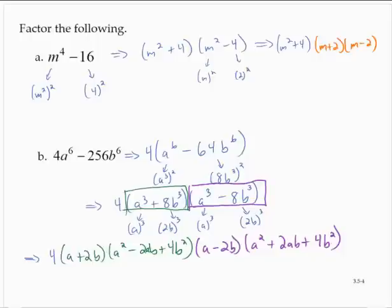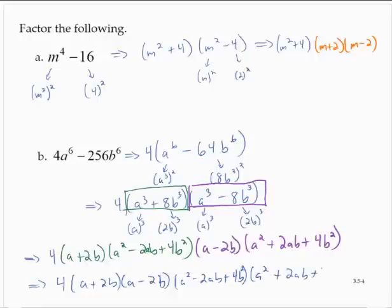Now, most of the time, we would then rearrange this. We would put the 4 first. And we would have, then, the a plus 2b and the a minus 2b. And then, finally, the a square minus 2ab plus 4b square and the a square plus 2ab plus 4b square.